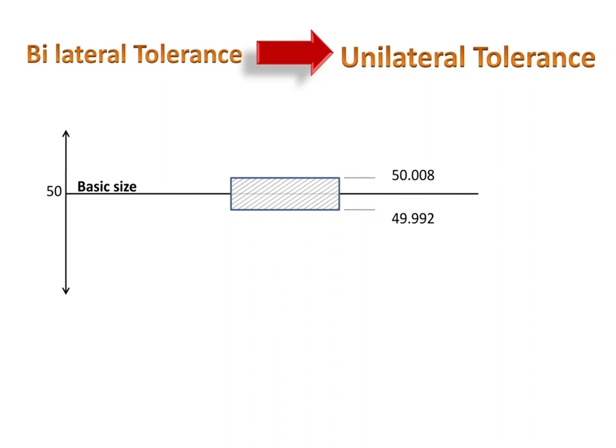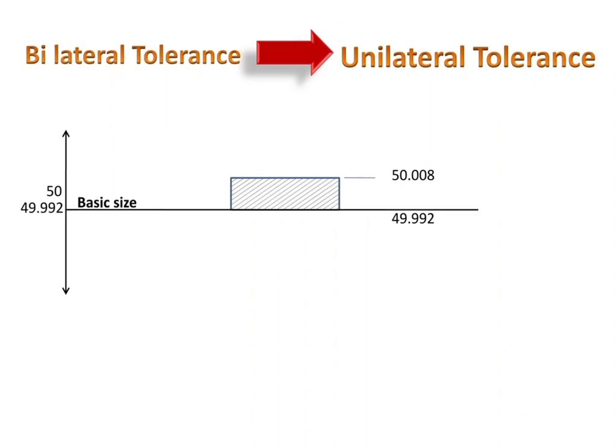In order to convert bilateral tolerance to unilateral tolerance, we will have to shift the basic size. Now you can see the basic size has changed from 50 to 49.992, and the tolerance zone available is only on one side of the basic size — that is the unilateral tolerance system.